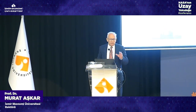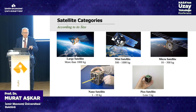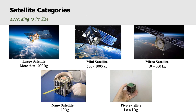Another classification is by size. We have large satellites, usually larger than 1,000 kilograms. Turkey is currently building the Türksat 6A satellite, which will be four tons — 4,000 kilograms. We have mini satellites between 500 and 1,000 kg, microsatellites between 10 and 500 kg, nanosatellites done by universities, and pico satellites weighing just a few kilograms.